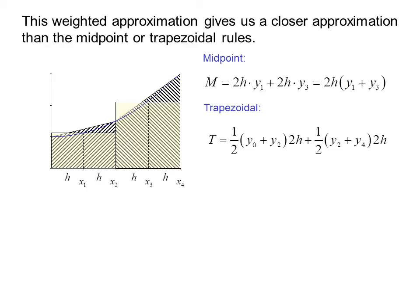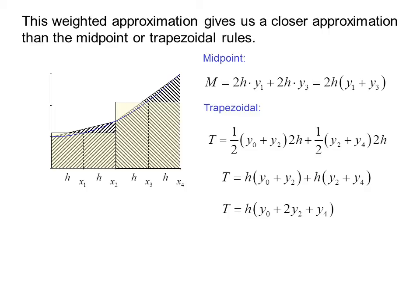The trapezoidal rule would give us 1/2 times the sum of the two ends, which is (y₀ plus y₂) times the base 2h, plus 1/2 times (y₂ plus y₄) times 2h. The 2s cancel, so we get T equals h times (y₀ plus y₂) plus h times (y₂ plus y₄). Factoring out h, we get T equals h times (y₀ plus 2y₂ plus y₄).